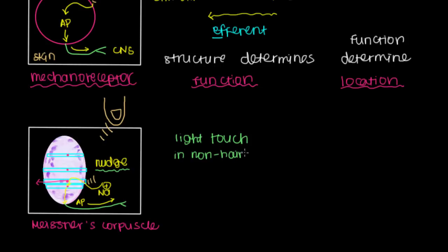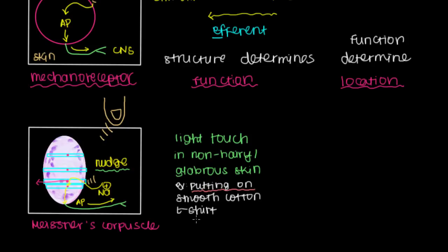Non-hairy skin. And we'll talk about what works in hairy skin. But another term for non-hairy skin is glabrous skin. So it perceives light touch in glabrous skin. And an example of light touch would be something like putting on a smooth cotton t-shirt. And I want to emphasize here that Meissner's corpuscle only works when you're putting this smooth cotton t-shirt on. It's not firing after the t-shirt's already on you. You don't feel that you're wearing clothes every second of the day.